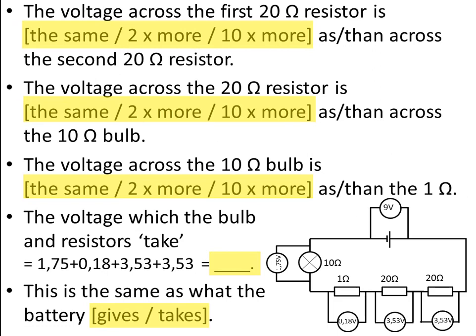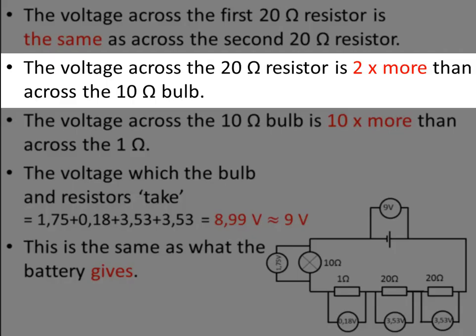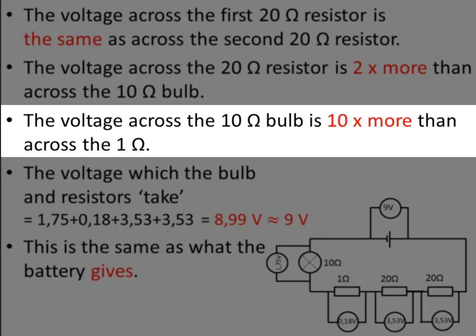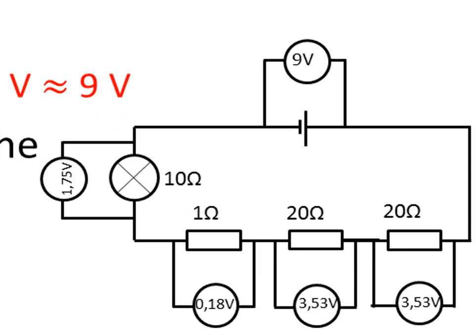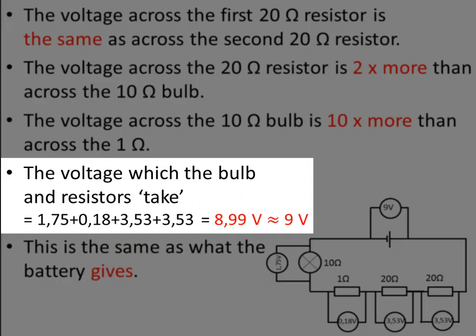So have you answered these questions correctly? The voltage across the first 20 ohm resistor is the same as across the second 20 ohm resistor: 3.53 volts each. The voltage across the 20 ohm resistor is two times more than across the 10 ohm resistor — 1.75 multiplied by 2 gives 3.5, which is effectively the voltage across the 20 ohm resistor. The voltage across the 10 ohm bulb is 10 times more than across the 1 ohm resistor: 0.18 times 10 gives 1.8 volt, which is 1.75 rounded off. If there had been no rounding at all, it would come out perfectly as 9 volts.